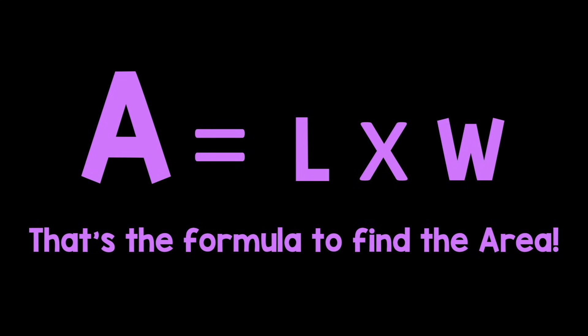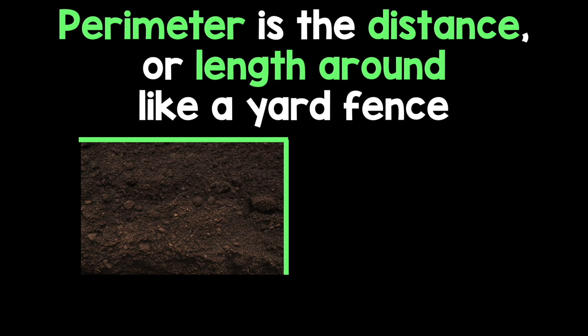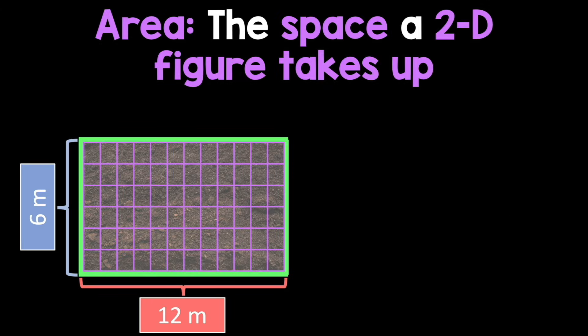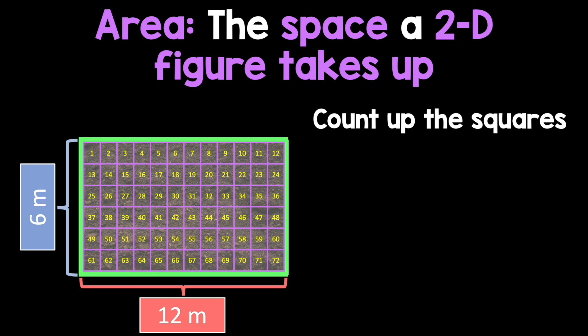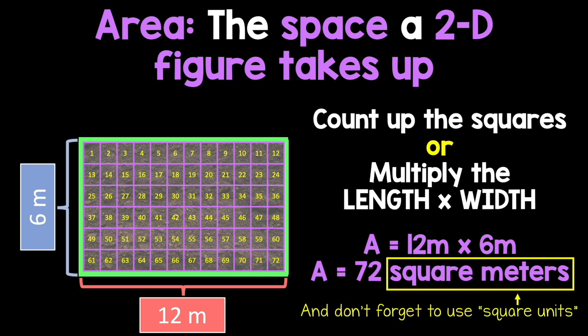Let me be of some assistance: perimeter is the distance or length around, like a yard fence. Find the sum of the sides with addition. You also gotta know about area — the space that a 2D figure takes up. Count up the squares or multiply the length times width, and don't forget to use square units.